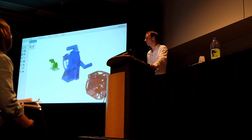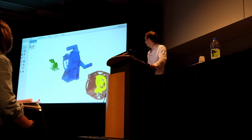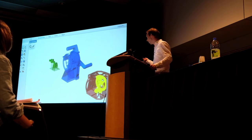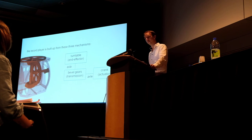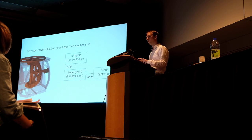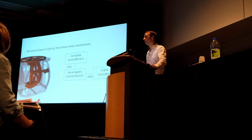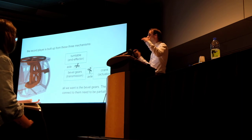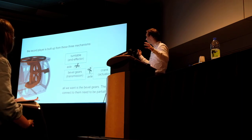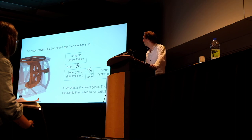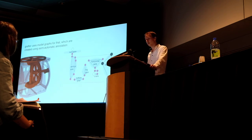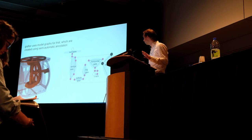We need to select the mechanism in the record player. I simply click on the gear and click again to extend the selection. Somehow the software system understood I wanted to select this mechanism. The record player is built from three different mechanisms: a turntable on top as the end effector, a bevel gear mechanism in between as the transmission, and a crank on the side. We only want the bevel gear mechanism. So we chop in the axles in between and select the mechanism contained between them.